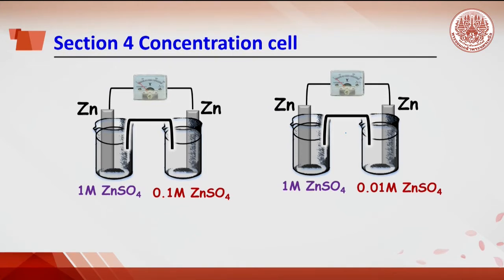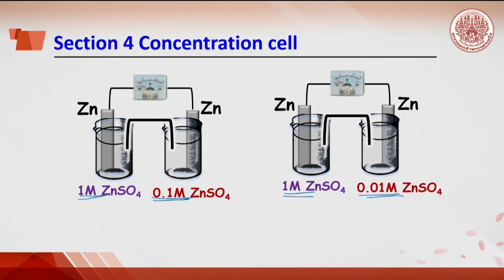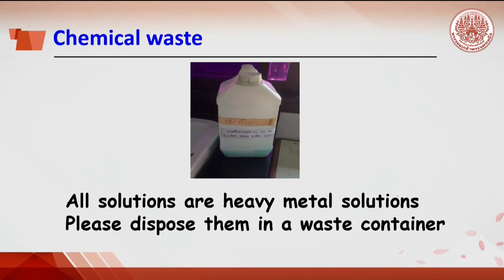Section 4: A concentration cell is a cell having the same electrode and solution, but with a difference in concentration. Hence, the electromotive force derives from the difference in concentration. In this experiment, the EMF cells are from zinc at concentrations of 1 molar and 0.1 molar, and zinc at 1 molar with 0.01 molar. Students can guess which cell gains more EMF and why. All solutions are heavy metal solutions — please dispose of them in the waste container.